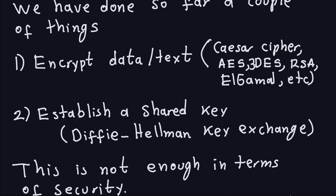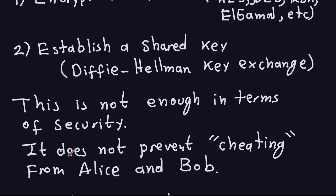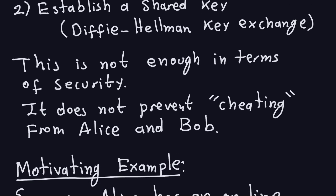Even though those things are really important, this is not enough in terms of security. What I mentioned earlier is that it doesn't prevent cheating from Alice and Bob themselves. Whenever we talk about security, we are always assuming that there is an outside party trying to do harm or fake messages. But in many cases, you also have to prevent cheating from both Alice and Bob — they could actually be the attackers. One of the things we'll talk about is: what if one of them tries to say that the other one didn't send that message? How do you prove that?